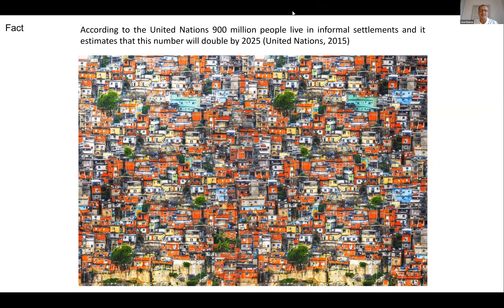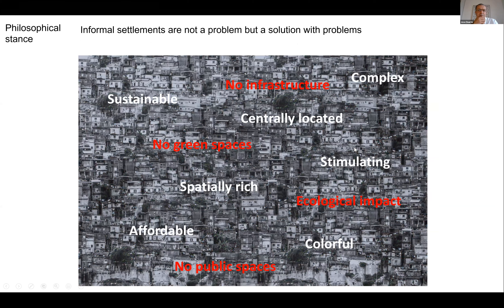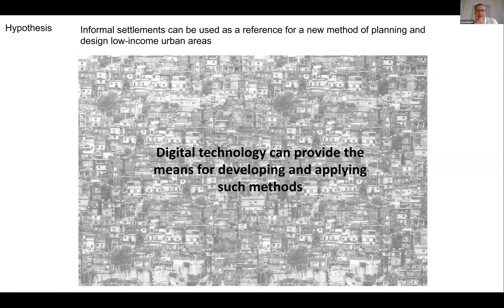According to the United Nations, 900 million people live today in informal settlements, and estimates suggest this number might double by 2025. We see informal settlements not as a problem but as a solution with many problems. They often lack infrastructure, green spaces, and public spaces, and have a huge ecological impact. On the other hand, they are very sustainable — they are complex, usually centrally located, stimulating environments that are affordable and colorful.